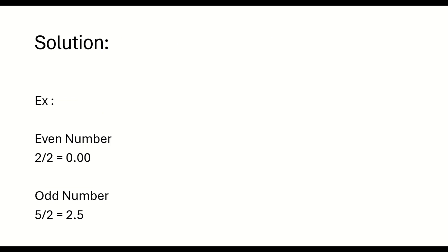For example, 2 is an even number. If you divide 2 by 2, you get 0.00 — a whole number. If it is an odd number, example 5, dividing 5 by 2 gives 2.5 — a decimal. So whenever you get a whole number result like 0.00 or 2.00, that is an even number. Whenever you get a decimal like 2.5 or 3.5, that is an odd number. We replicate this same logic in Automation Anywhere.